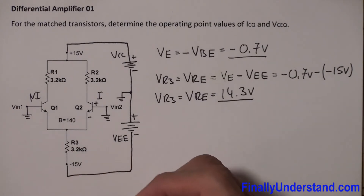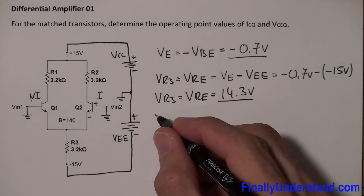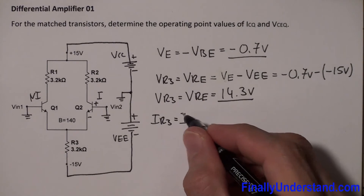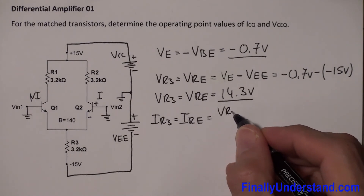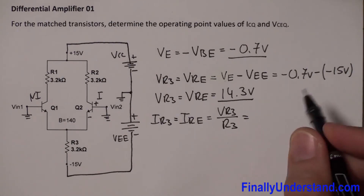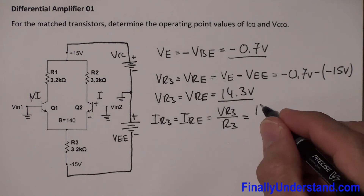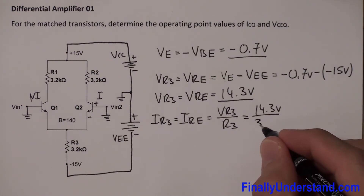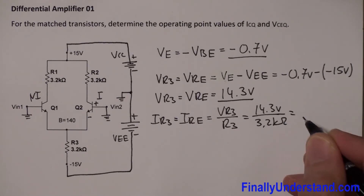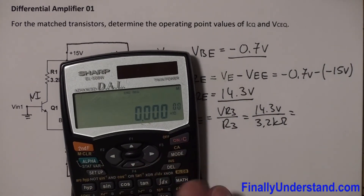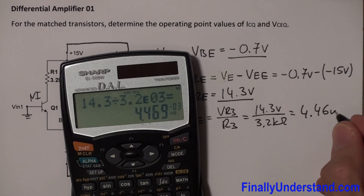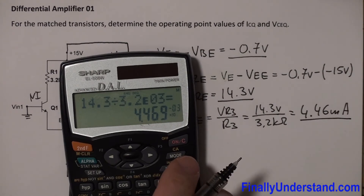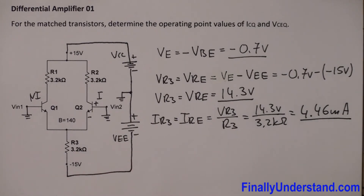Next, we find the current through R3. IR3, also written as IRE, equals VR3 divided by R3 — that's Ohm's law. So VR3 = 14.3 volts divided by R3 = 3.2 kΩ. Using the calculator: 14.3 ÷ 3200 = approximately 4.47 milliamps. This is the current through resistor R3.